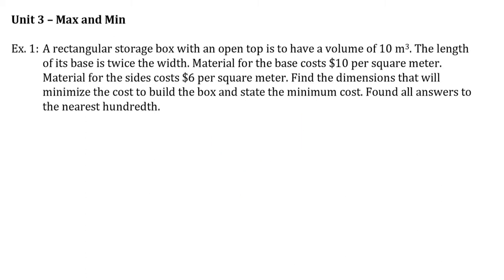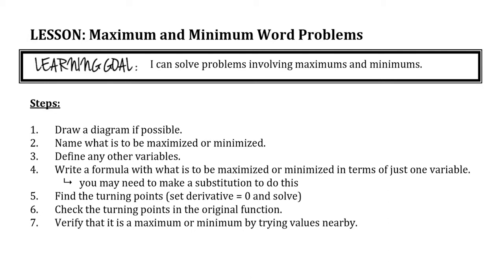We're going to start with an application. Going back to our lesson on this — you can review on your own — we had these strategies. I wouldn't call them strict steps 1 through 7; these are just things to consider while you're working on this. Diagrams can be very helpful to figure out what variables should represent and make sense of the problem. We often name what's being maximized or minimized, which helps us think about what equation or expression we're writing.